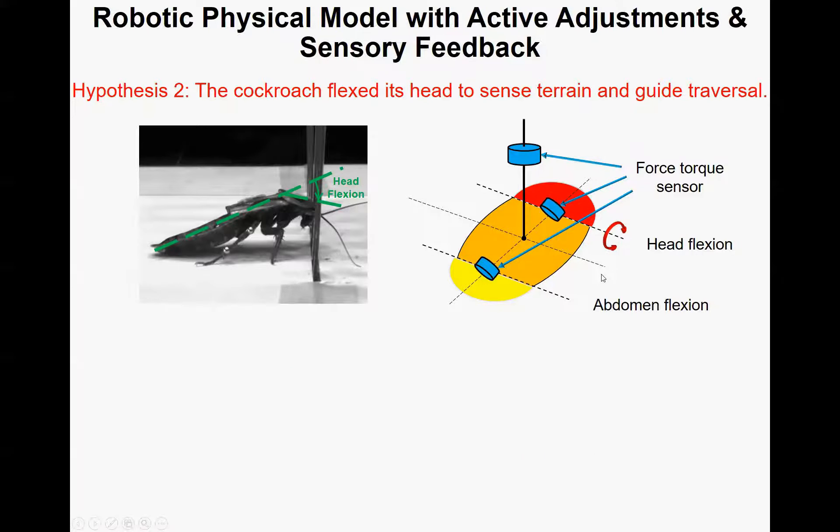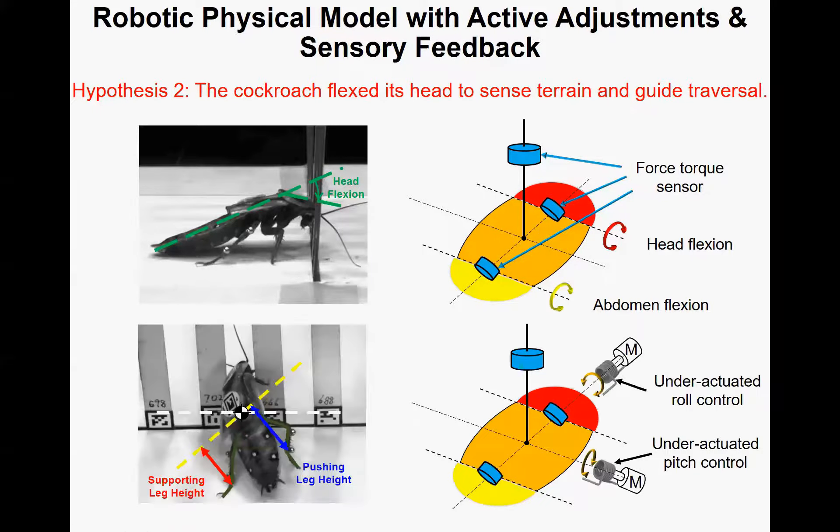To test our hypothesis, we modified the robot by adding a flexible head. And we added force and torque sensors on the robot's body and head to sense the terrain. We think that the animal can adjust body pose using legs, but the body orientation results from not only leg control but also physical interaction with obstacles. So the body is underactuated during interaction. To mimic how leg motion affects body motion during traversal, we will add this underactuated control on the robot's pitch and roll.